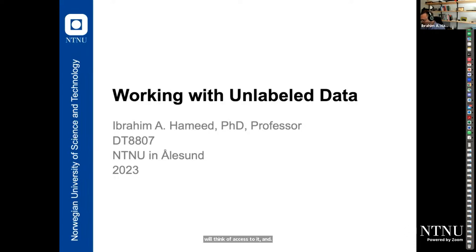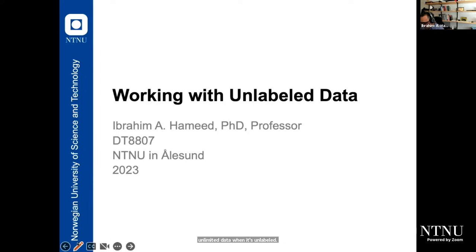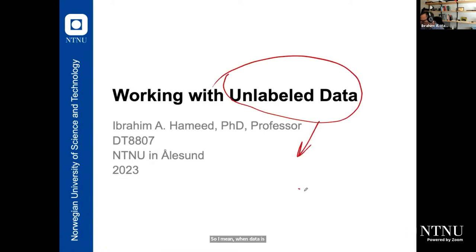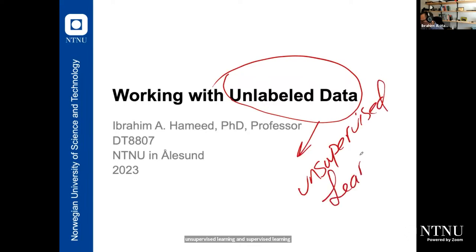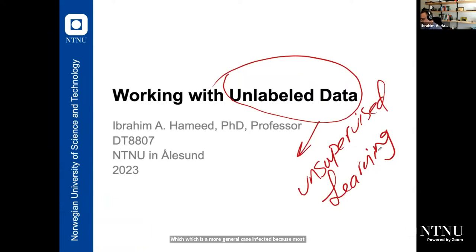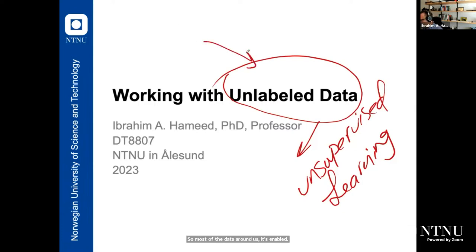Now we want to talk about working with unlabeled data. When data is unlabeled, it's unsupervised. When data is unlabeled, we need to go to unsupervised learning, which is a more general case because most of the data around us is unlabeled. It's really complex or expensive to label data. When we are working with machine learning or AI for unlabeled data, we create what is called strong AI. When you build a model for unlabeled data, they call it strong AI.